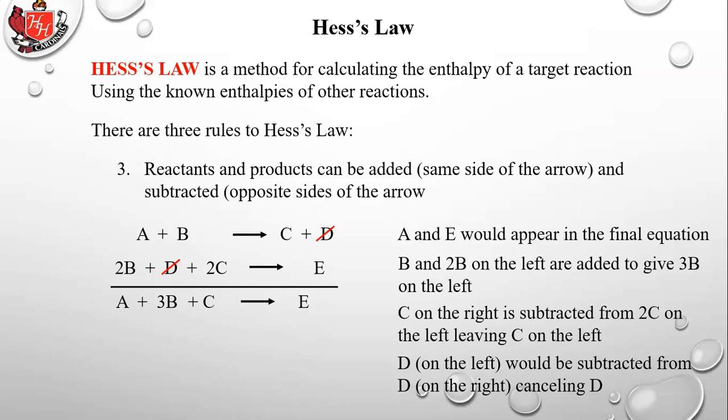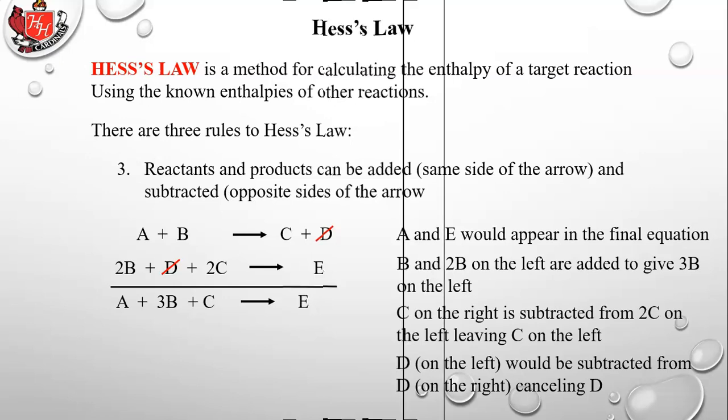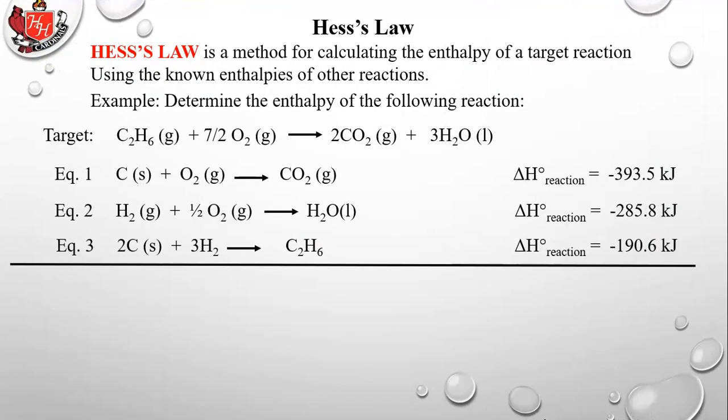Those are the three principles we use for a Hess's Law problem. Our target reaction — whose enthalpy we want to determine — is: C2H6 plus 7.5 O2 produces 2CO2 plus 3H2O. You'll notice the coefficient in front of O2 is a fraction. There's only one situation in chemistry where fractional coefficients are allowed, which we'll cover in the next lesson.